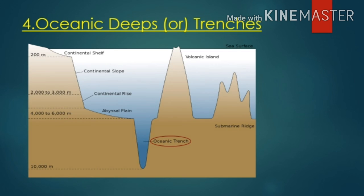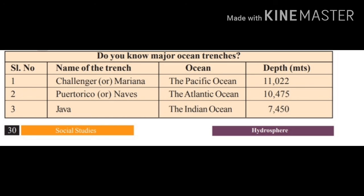Looking at the picture, the deepest place shown is the oceanic trench. Now let us see the table of major trenches. The first is the Challenger Deep or Mariana Trench, located in the Pacific Ocean, with a depth of 11,022 meters.